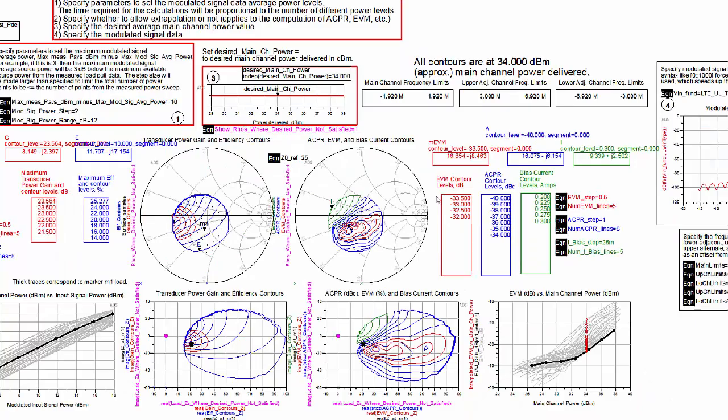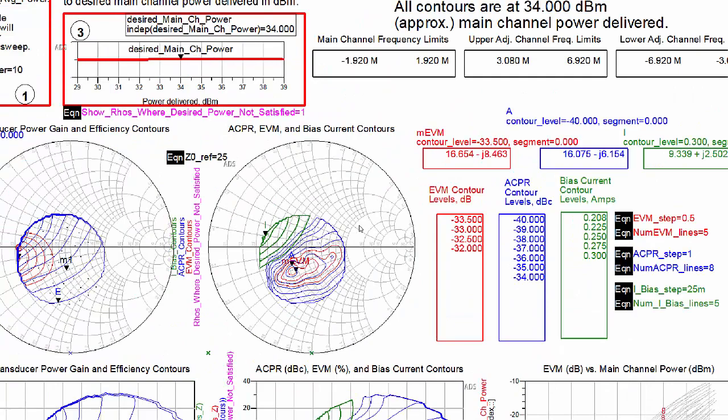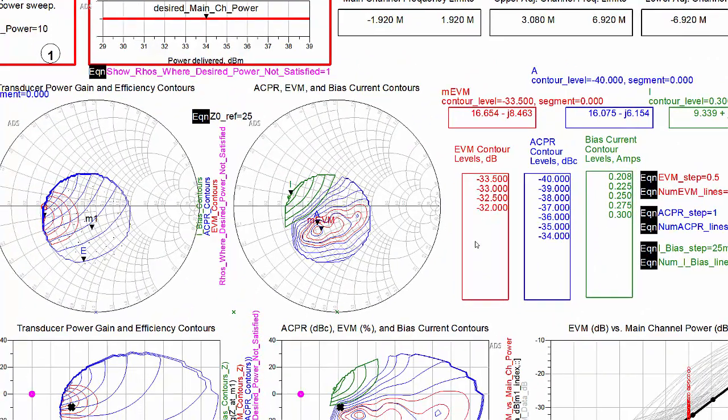Here, we have specified a desired main channel output power of 34 dBm. The red contours are of constant EVM, while the output power is 34 dBm.